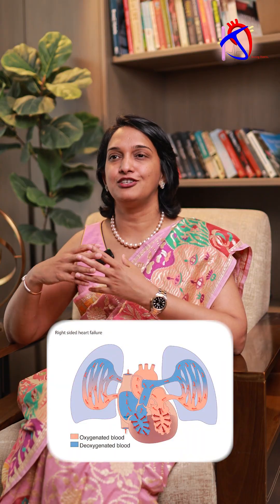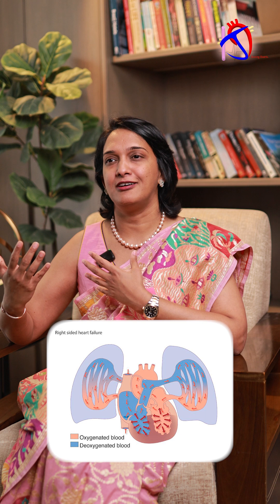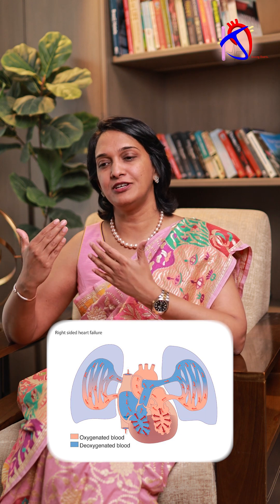There could be many reasons for pulmonary hypertension. Two important reasons are: one is anything related to the lungs, which can cause hypoxia and constriction of the pulmonary arteries, or it can be heart-related — anything related to the right side of the heart. These are the two main reasons you can have pulmonary hypertension.